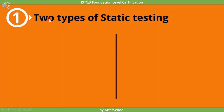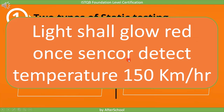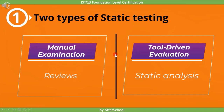We can perform static testing in two ways: manual examination and tool-driven evaluation. An example of manual evaluation is reviews, and tool-driven evaluation is static analysis. We saw this example where we read the requirement and found mistakes — we did it manually, and this type of static testing is called a review. Whereas if there is software which can find spelling mistakes and provide the report directly, such testing is called tool-driven examination, which comes under static analysis. So we can perform static testing by reviewing the work product (manual examination) or by static analysis (tool-driven examination).